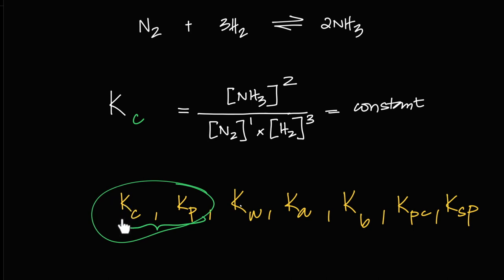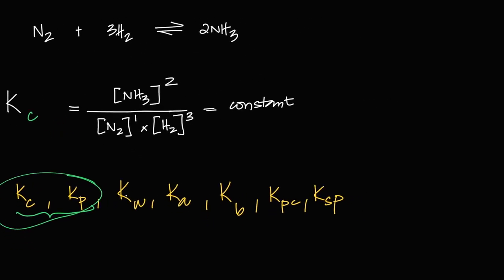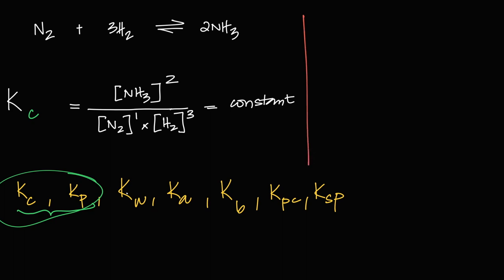Kc stands for equilibrium constant — the constant of the equilibrium which states that the right-hand side over the left-hand side is a constant. Kc is equation specific. For example, you could write the Haber process as 2NH₃ ⇌ N₂ + 3H₂ — there's absolutely nothing wrong with that chemically. Equilibrium can be achieved from either side. But Kc is specific to how the equation is written.